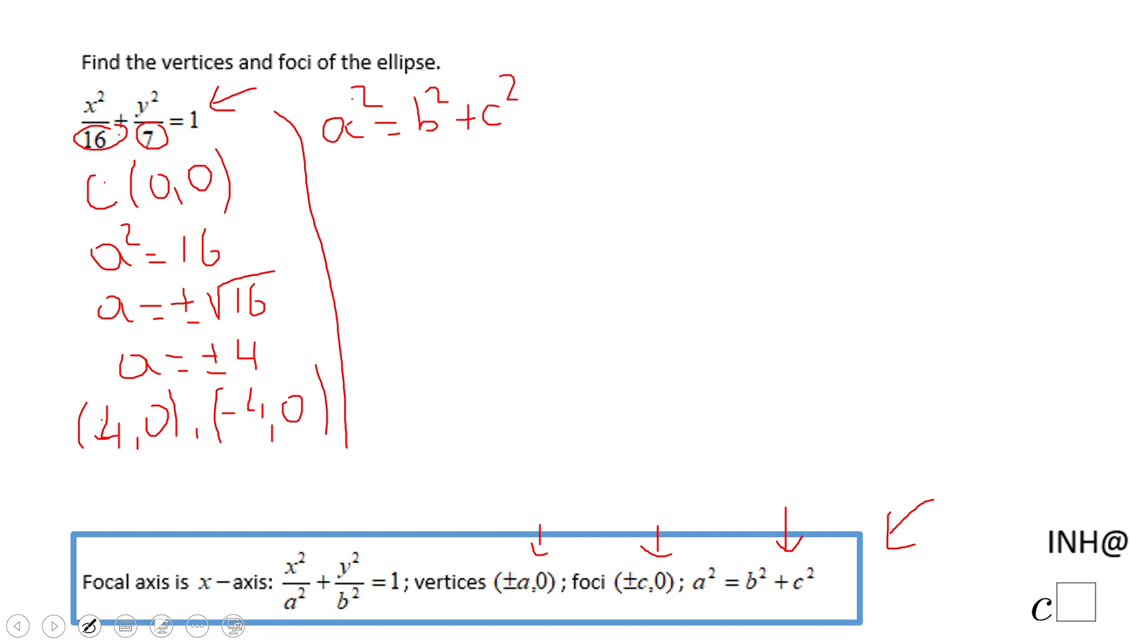a squared is 16. b squared is the 7 I mentioned at the beginning. How do we find c squared? We're gonna subtract 7 and that will give us 9. So c is gonna be square root of 9. Don't forget to put plus and minus. That will be plus and minus 3.